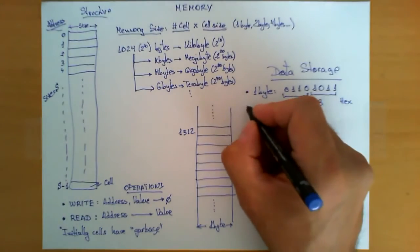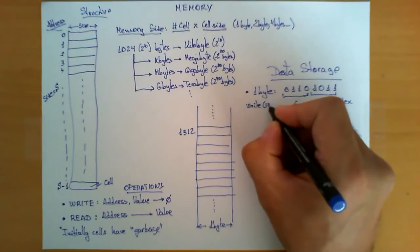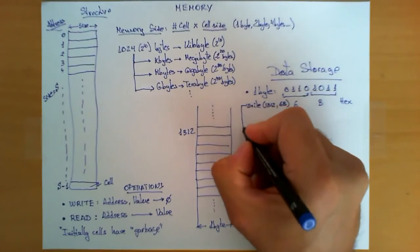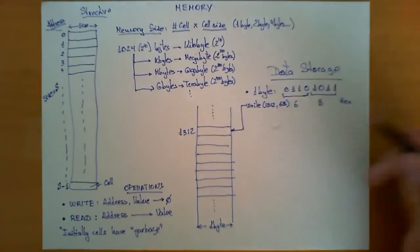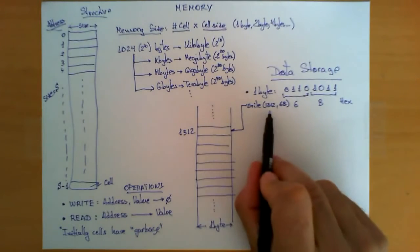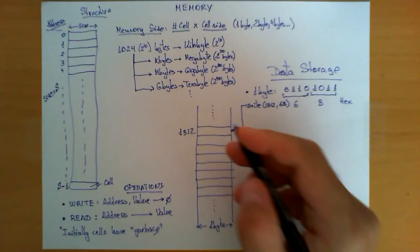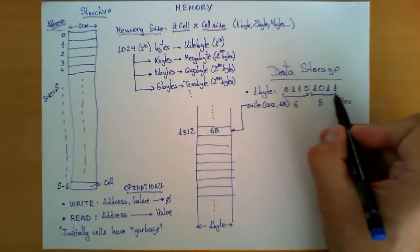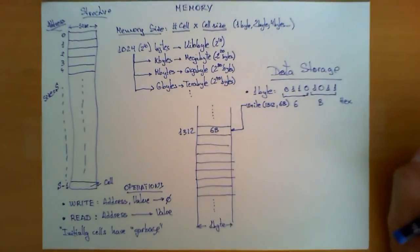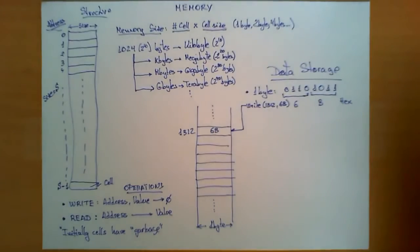Typically what happens is that if I execute the operation write 1312, 6B, this translates into the following action. In cell 1312, the address, I store the value 6B, which is the hexadecimal representation of this byte, which corresponds with eight bits, which is exactly the width of this cell. So this is the result of storing one byte in address 1312.